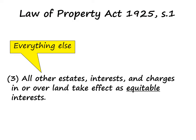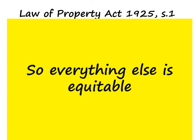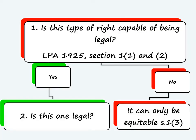Moving on to Section 1, Subsection 3: this tells us that if the estate or interest you're dealing with isn't listed in either Subsections 1 or 2, then it's equitable — these are the property rights which can never be legal. So here's a summary of what we've seen so far. The first issue is whether this type of property right is capable of being legal — we look to see whether it's listed in Section 1.1 or Section 1.2. If the answer is yes, the next stage is whether this particular one is legal. But if the right isn't in either section, then it can only ever be equitable.